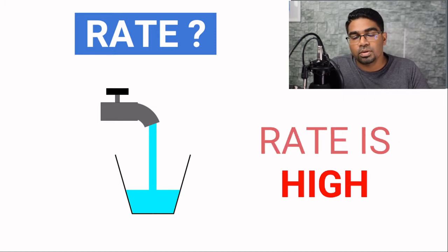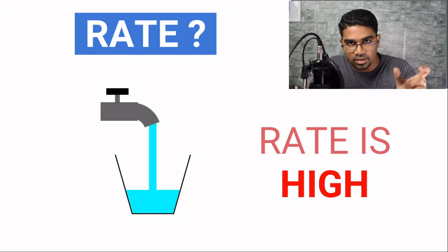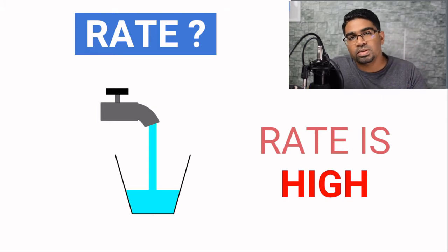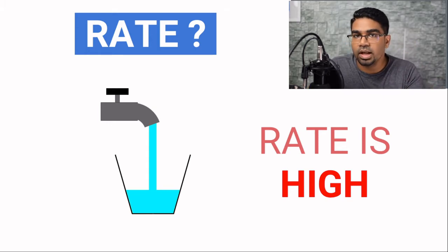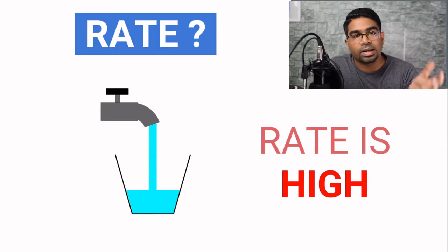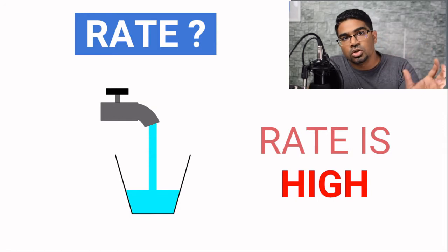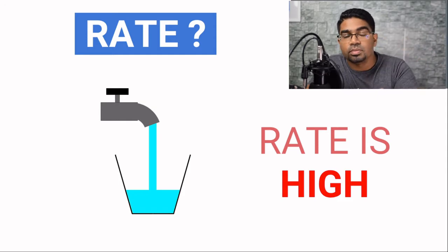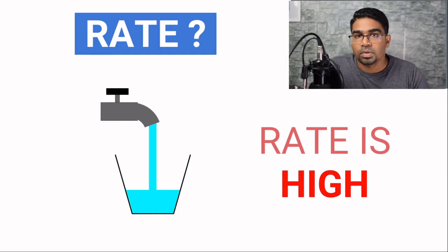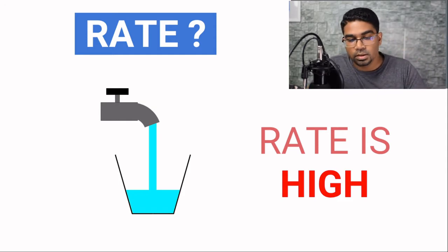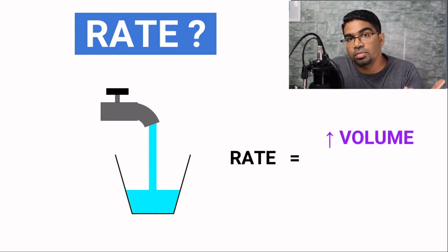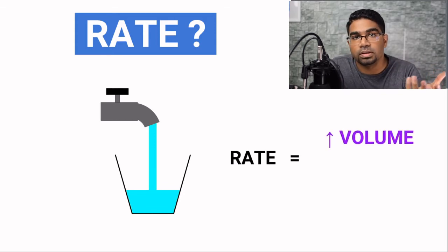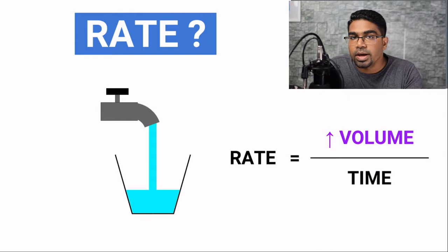So we can see an example of the use of the term rate here. But when we say slow and fast, it is not very helpful. So we need a way in which we can quantify this rate, so that we can do a quantitative comparison between two different rates. One way to do it is we can take the increase in volume of water in the cup per unit time.